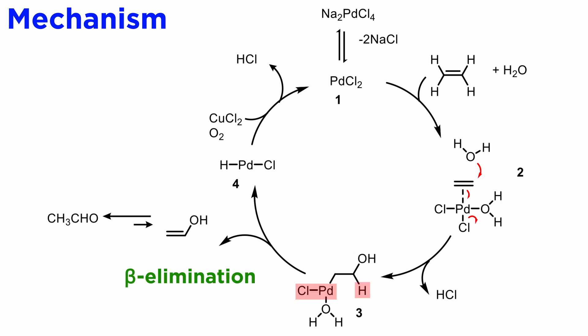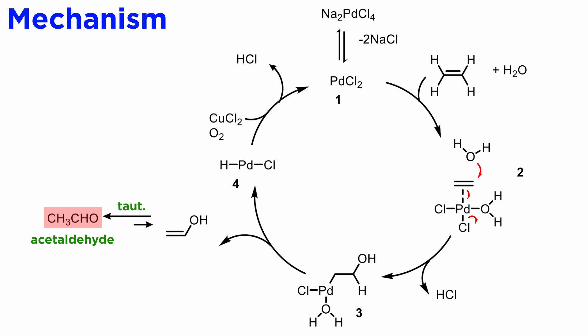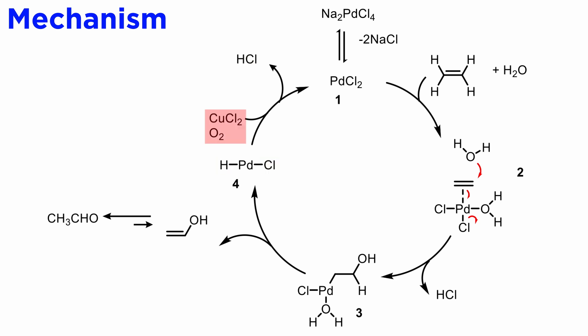This undergoes a beta-elimination of HPdCl to yield first the enol of acetaldehyde, which tautomerizes to give the more stable carbonyl form. The palladium-0 is then converted back to 1 by the elimination of HCl and reoxidation by CuCl2 and oxygen. More precisely, first copper-2 converts palladium-0 to palladium-2, and then oxygen reconverts copper-1 to copper-2, making the reaction catalytic both in copper and palladium.